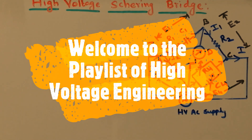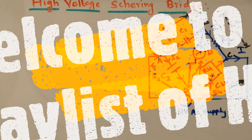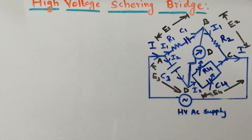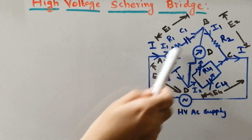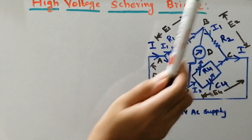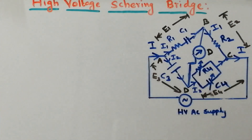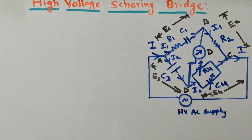As we already know, it obeys the principle of Wheatstone's bridge. Now let us familiarize the circuit of Schering bridge. First and foremost, you need to consider the circuit of Schering bridge. We have four arms: AB, then BC, CD, and AD. These are the four arms of the Schering bridge.